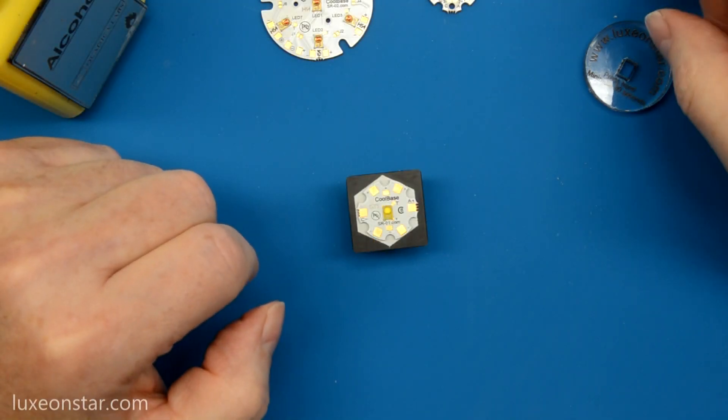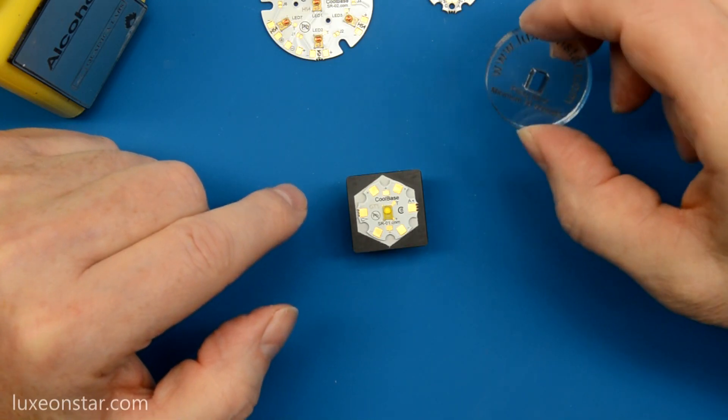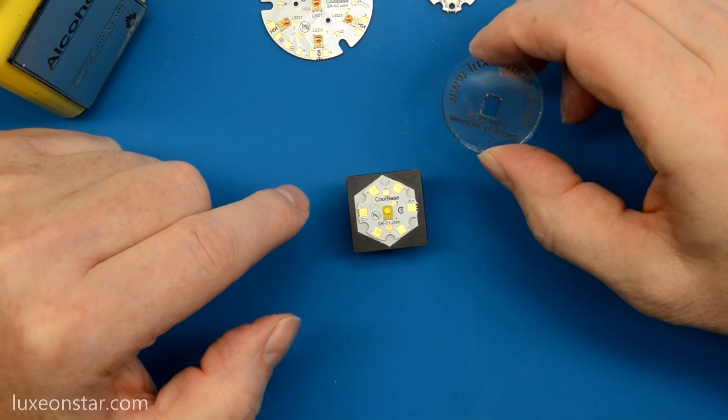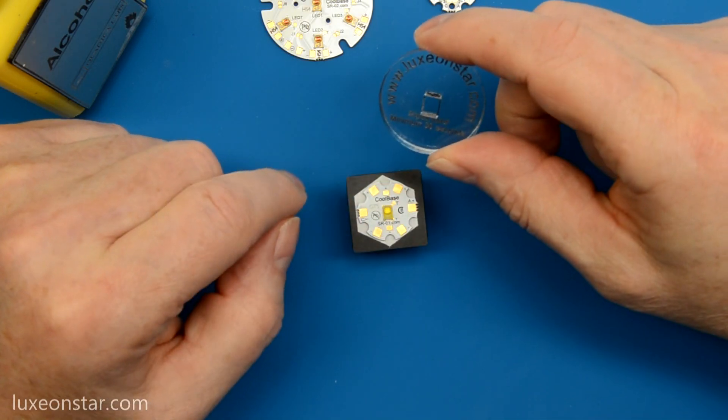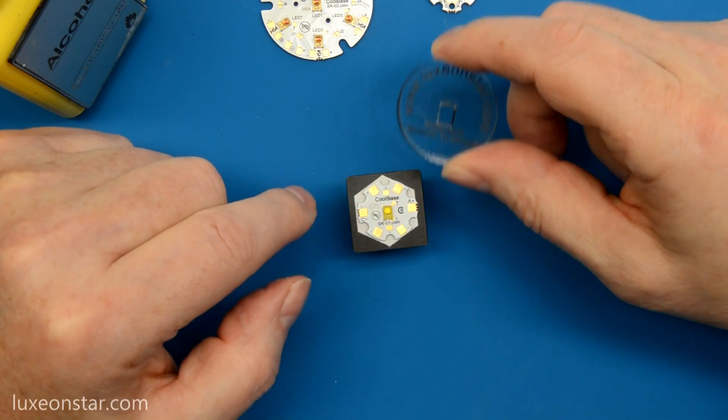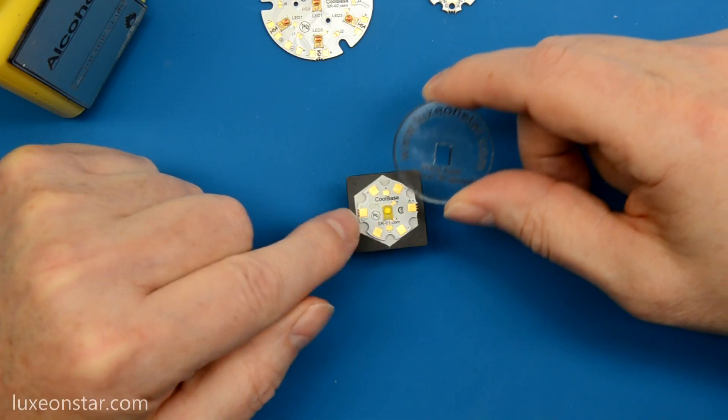In order to apply as much pressure as evenly as possible across the surface of the LED, we now include these handy little LED presses with each order of thermal tape. There's an LED press for each type of LED assembly that we offer. For example, this press will work with any single LED assembly, like this star.